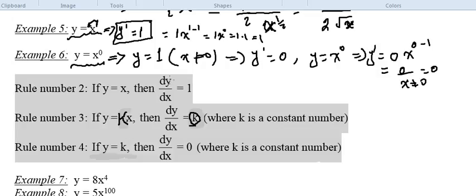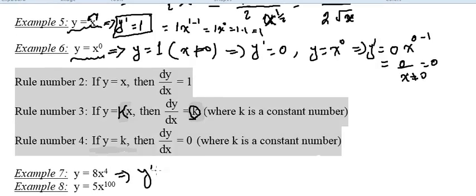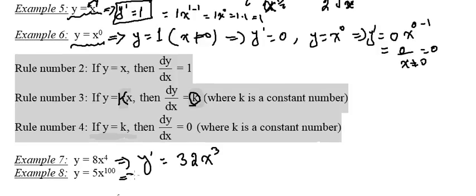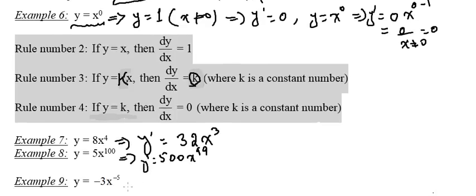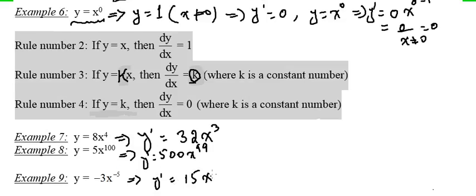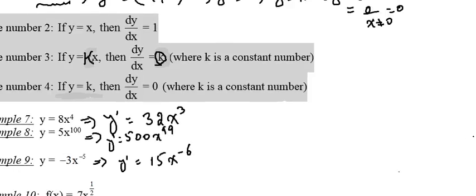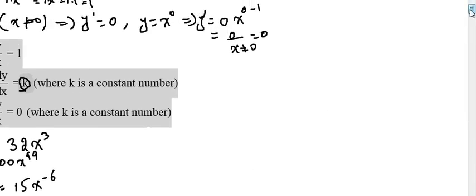Let's continue to example 7. y equals 8 times x to the power 4. This implies y prime equals 32 x to the power 3, since 4 times 8 is 32 and the exponent drops to 4 minus 1 equals 3. Similarly for 100 times x to the power 5, y prime is 500 x to the power 99. And here y prime is: minus 5 times minus 3 is 15, x to the power (minus 5 minus 1) which is minus 6. Be careful — some students write minus 4 by mistake; it is minus 5 minus 1, which is minus 6.